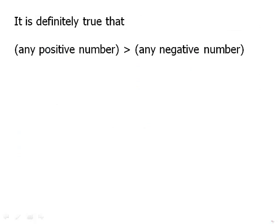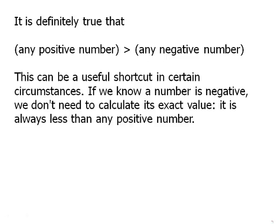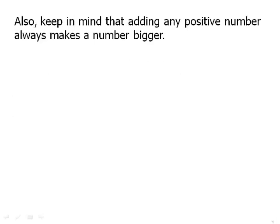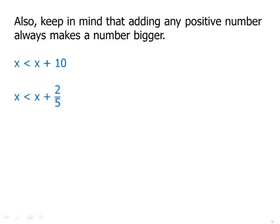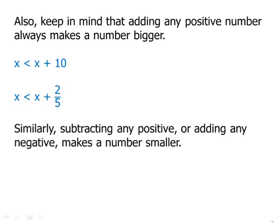It is definitely true that any positive number is greater than any negative number. Now that might be an obvious statement, but this can be a useful shortcut in certain circumstances. If we know that a number is negative, we don't need to calculate its exact value. We know for a fact that just by fact that it's negative, it is always less than any positive number. Also keep in mind that adding any positive number always makes a number bigger. So for example, x plus 10 has to be bigger than x. And in fact, any positive number could even be a fraction. x plus 2 fifths has to be greater than x. Much in the same way, subtracting any positive or adding any negative makes a number smaller, always. So x has to be greater than x minus 3. Subtracting 3 necessarily makes anything smaller.